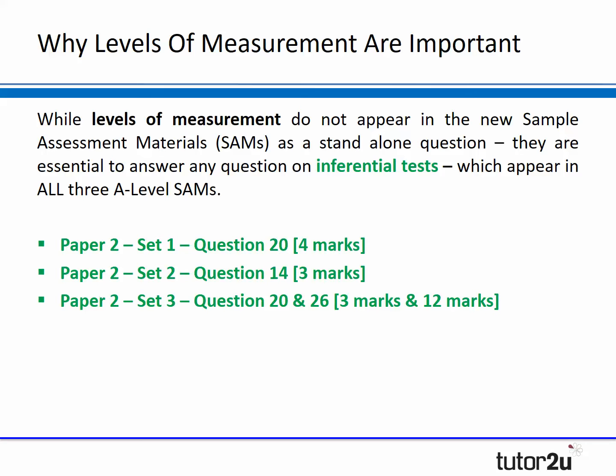Paper two is where the research method section is, and in sample assessment materials sets one, two, and three - all three of the available papers - there is a question that would require students to have levels of measurement understanding and knowledge: worth four marks in set one, three marks in set two. And there is also an extended response question in the final set worth 12 marks that again requires this understanding. So it's really, really important for students to understand levels of measurement in the context of research methods.